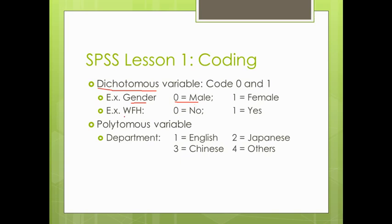Another item that is conceptualized as dichotomous is this: Do you like to work from home? And the respondents have two options to choose from: No, I don't like, and yes, I like. So basically we're going to code zero for no and one for yes.